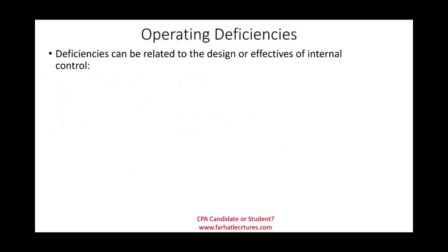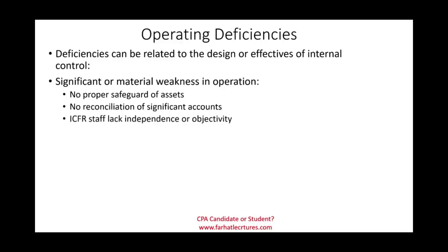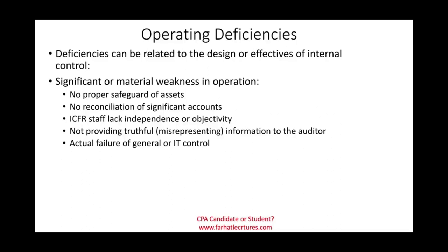Examples of significant or material weakness in operation include: no proper safeguard of assets; no reconciliation of significant accounts; staff lacking independence and objectivity due to undue pressure from upper management; misrepresenting information to the auditor; actual failure of general or IT controls not working properly; and a high degree of deviation, failure, or exception rate.